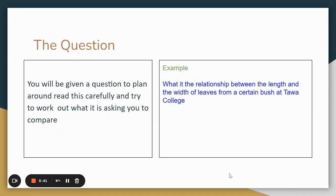The first part is to look at the question. You'll be given a question and you'll need to read this carefully and try and work out what you're being asked to compare. For this example we're looking at what is the relationship between the length and the width of leaves from a certain bush at Tawa College.